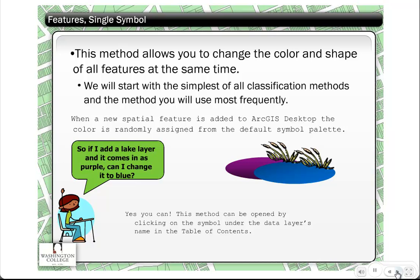The simplest way to change the symbology of a feature is to use the single symbol option. You can change the color and shape of all the features at the same time. Very simple to use. I briefly explained this in the introduction to ArcMap, so it'll give you a little bit of an idea of how to do that.